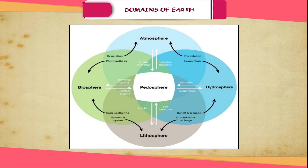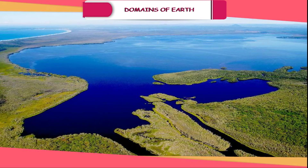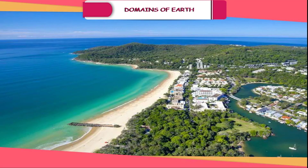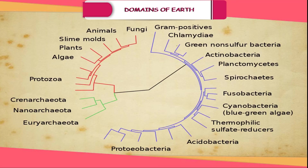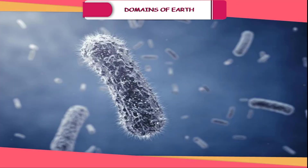Life is possible where all three zones — the lithosphere, the hydrosphere and the atmosphere — come in contact. This narrow contact zone consisting of living organisms is called the biosphere. It extends a little above the surface into the atmosphere and a little below the surface and into the water bodies. There are several species of organisms that vary in size from microbes and bacteria to huge mammals.